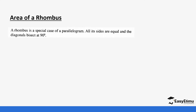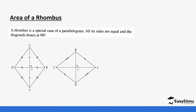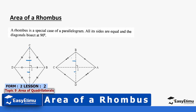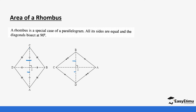A rhombus is a special case of a parallelogram — its sides are equal and the diagonals bisect at 90 degrees. If you flip the rhombus it forms two isosceles triangles, an upper one and a lower one. When calculating the area of a rhombus, we are essentially finding the area of those two triangles, and there are different ways to make your work easier.